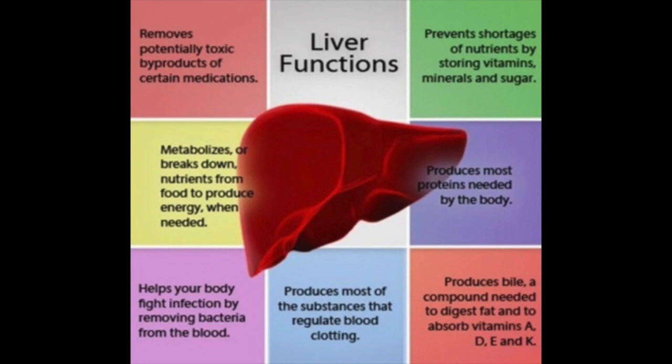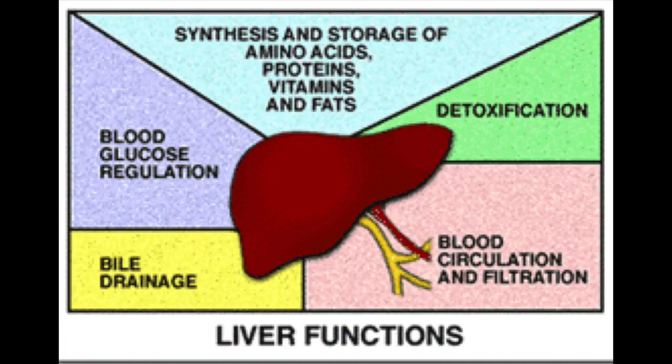It is important for lipid metabolism — it produces a lot of cholesterol and proteins which carry them. It is important for the production of a lot of amino acids, which are the basic framework of proteins. Apart from that, it plays a role in producing your clotting factors and for your hemoglobin and so on.